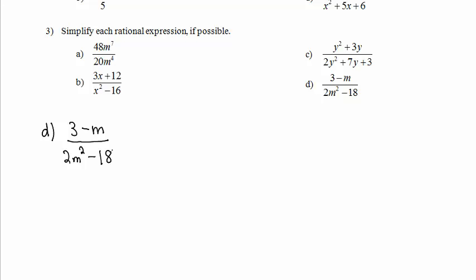In Part D, we must simplify this rational expression. Please note that since this expression has not been factored in the numerator and or denominator, this 3 and this 18 cannot be reduced down. In the denominator, we first factor out the greatest common factor, 2. We get 2 times the quantity m squared minus 9.